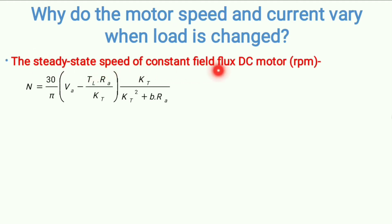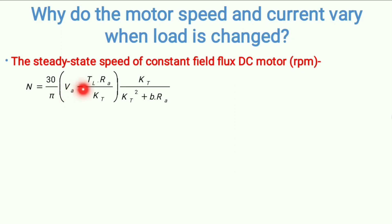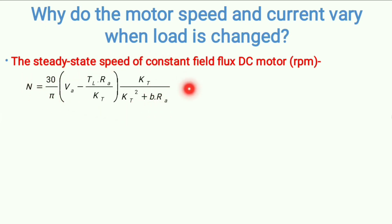The steady-state speed of a constant field flux DC motor in RPM is given by this equation. Here, n is the speed in RPM, and this is the relationship among speed, armature voltage, and load torque TL. The constants are: kt is the torque constant, b is the viscous constant, and ra is the armature resistance.